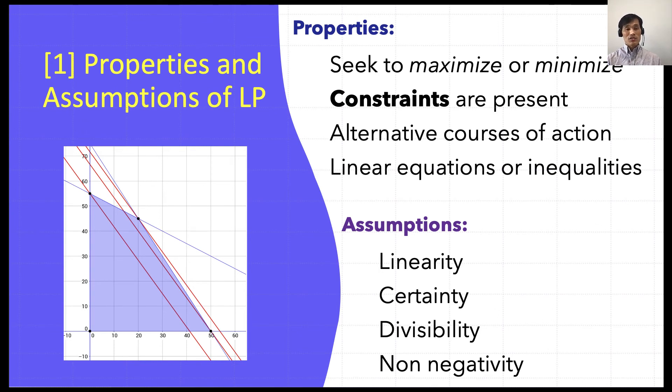Third assumption is divisibility. We make the divisibility assumption that solutions need to be in whole numbers, in other words, integers. For example, we don't have half a person, we don't have half a car. Either whole person or whole car. So everything has to be integer. And these are also divisible and may take any fractional value if product cannot be produced in fractions. But we assume that it can be producing fractions for mathematical reasons.